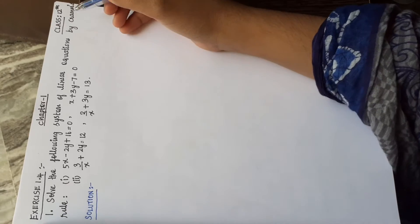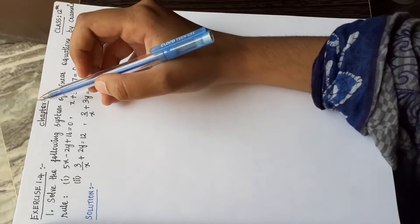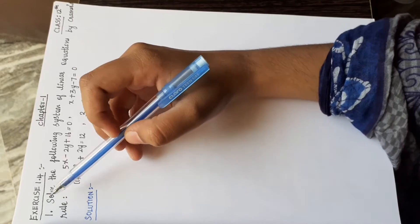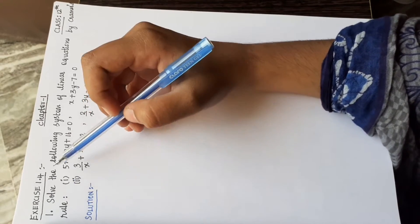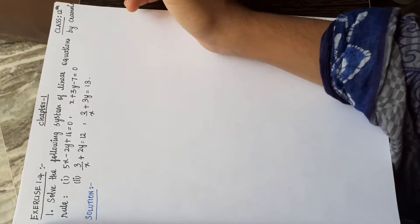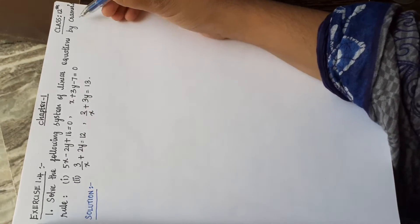Welcome to Refazmax. 12th Standard Chapter 1 Exercise 1.4, first one: solve the following system of linear equations by Cramer's rule.